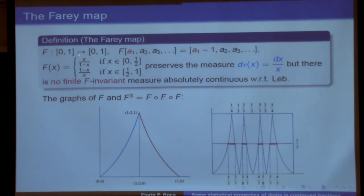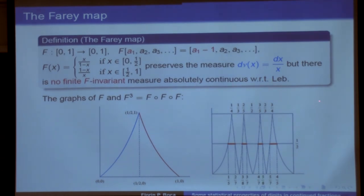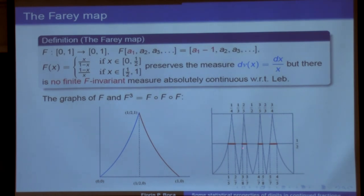Now for the second part of the talk, which is about the Farey map. The Farey map simply subtracts 1 from the first digit, and in closed form is given by this formula. It preserves the measure dx/x. But there is no finite Farey-invariant measure absolutely continuous with respect to Lebesgue — there are only singular measures. The derivative of the Minkowski question mark function provides an interesting invariant measure for this map. The graph of the Farey map iterated three times gives something like a bunch of spikes — there are 2^(n−1) spikes — and the problem is estimating the total measure of the lengths of these connected components.